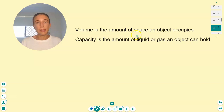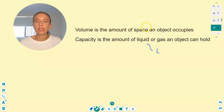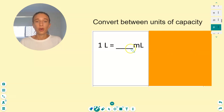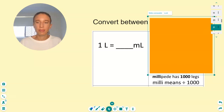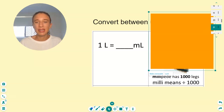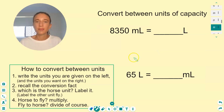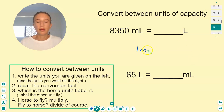Just to recap: volume is the amount of space an object occupies; capacity is the amount of liquid, so we use liters or milliliters, while volume uses centimeters cubed or meters cubed. Now let's look at converting between units of capacity. Do you know the conversion factor linking one liter with milliliters? Milli means divide by a thousand — one liter is a thousand milliliters. That's the only conversion factor you need.